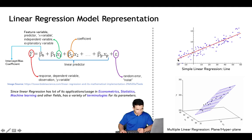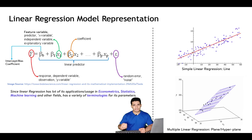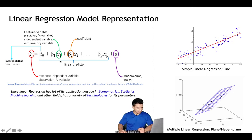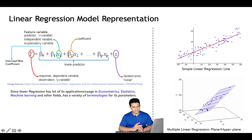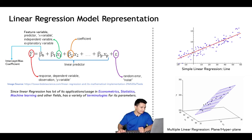There is some error which the model cannot explain — that is the random error or noise. When there is only one x, it's simple linear regression and the model is a line. In multiple linear regression with multiple features, the separating boundary becomes a plane or hyperplane, because the space is multi-dimensional.